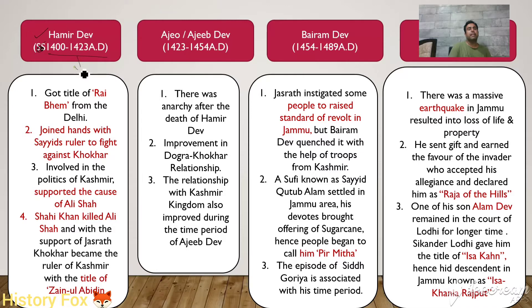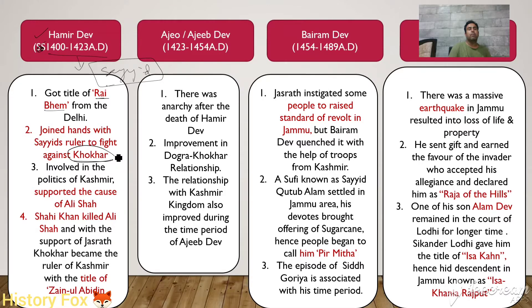During this time period, Hamirdev got the title of Rai Bheem from Delhi. He joined hands with Sayyid rulers to fight against the Khokars. The Khokars created big problems for the Dev dynasty and the Jammu rulers. Hamirdev became involved in the politics of Kashmir and supported the cause of Ali Shah.